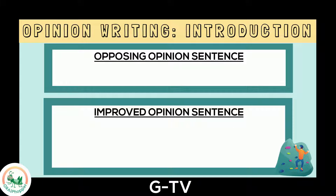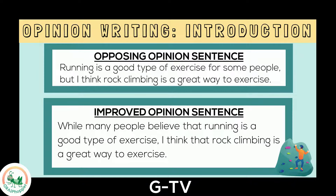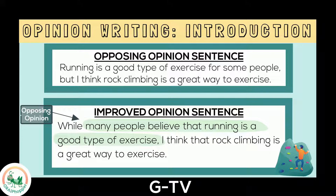Here is an opposing opinion sentence: "Running is a good type of exercise for some people, but I think rock climbing is a great way to exercise." I can add a sentence frame to improve this: "While many people believe that running is a good type of exercise, I think that rock climbing is a great way to exercise." I wrote the opposing opinion first, then wrote my actual opinion after the phrase "I think." Now I've got a few opinion sentence options.